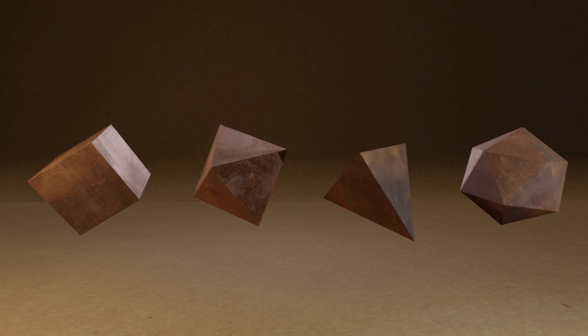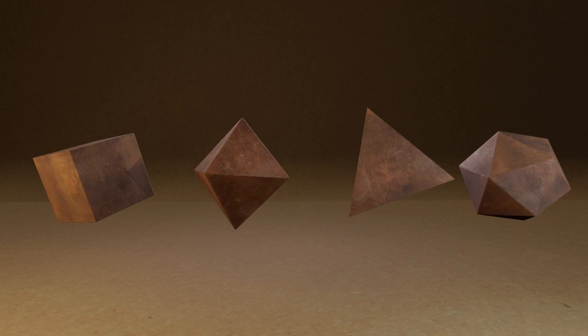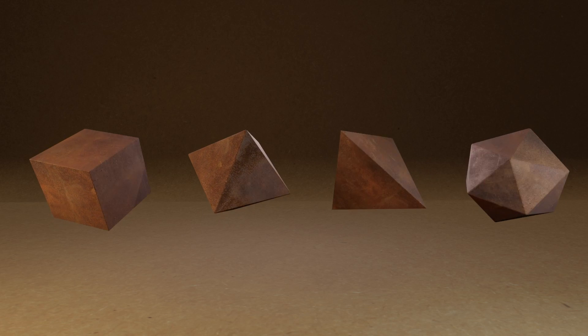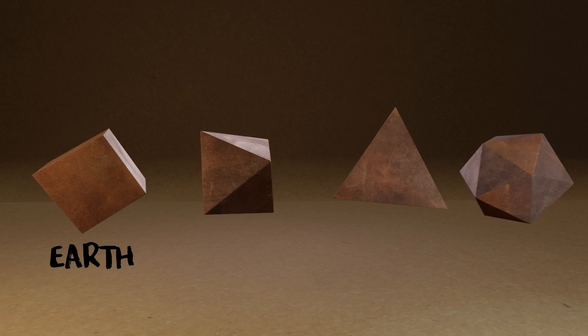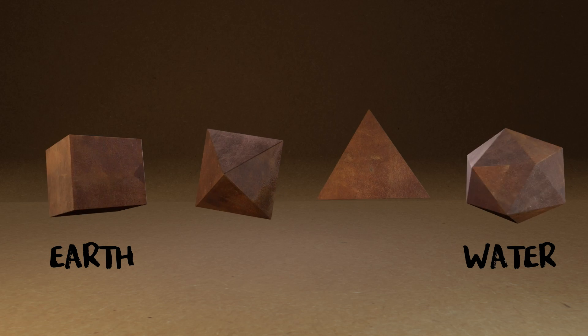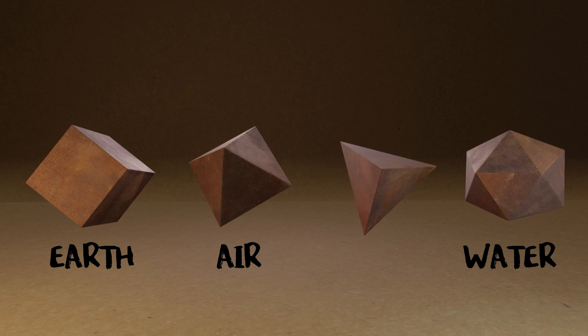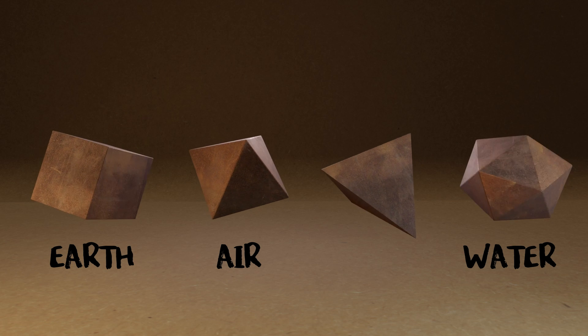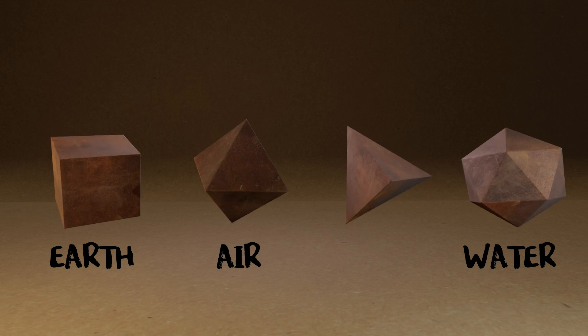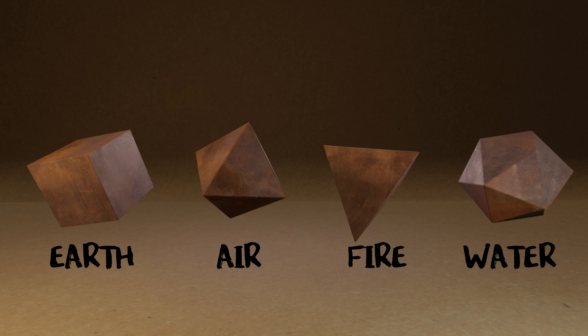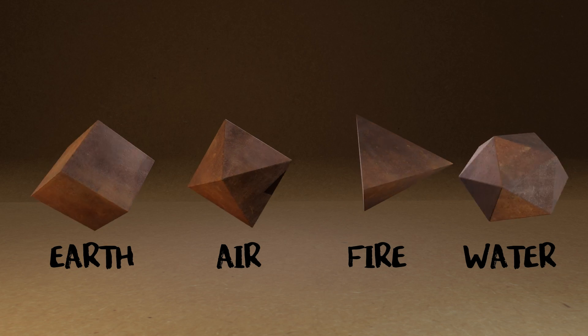And each of those would have a shape. Earth, that was the shape of the cube. Water, the icosahedron, made out of 20 equilateral triangles. Air was the octahedron, made out of eight equilateral triangles, and fire was this shape here, the tetrahedron, the kind of spikiest of the shapes.